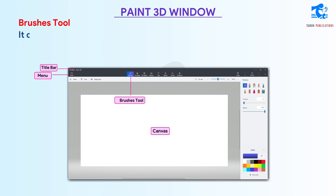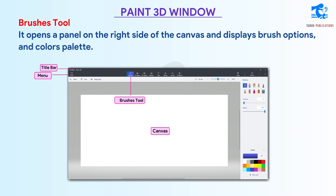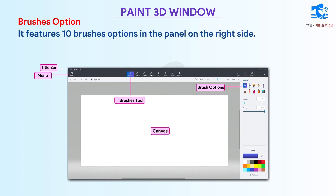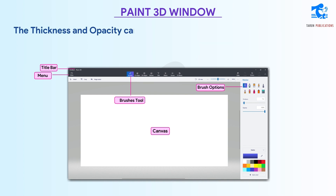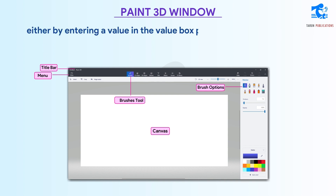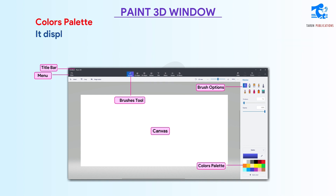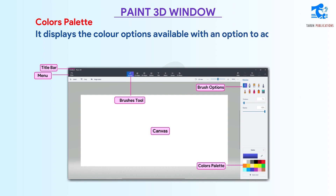Brushes tool: It opens a panel on the right side of the canvas and displays brush options and a colors palette. Brushes option: It features 10 brush options in the panel on the right side. It also displays two sliders for thickness and opacity, which can be adjusted by entering a value in the value box or by using the slider beneath the option. Colors palette: It displays the color options available with an option to add more colors and effects like Matte, Gloss, etc.